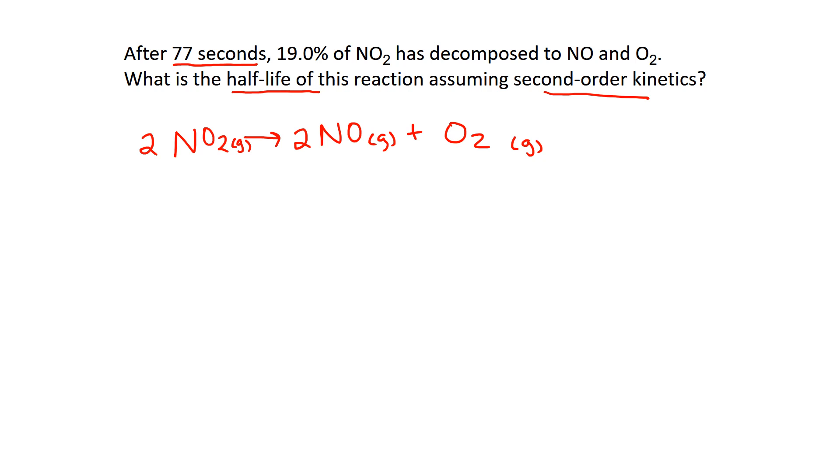And so the second thing says we're looking for the half-life. So that means we're looking for the amount of time it takes for the concentration of the reactants or NO2 to cut in half. And so this also tells us this is a second order kinetics. So with second order kinetics, I know that I have a half-life formula that's equal to 1 over K times the concentration of A initial.